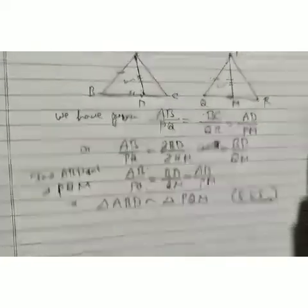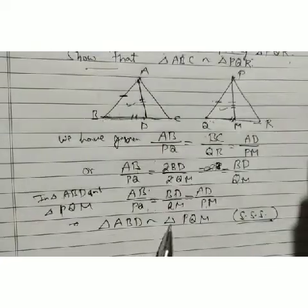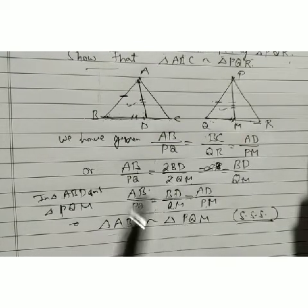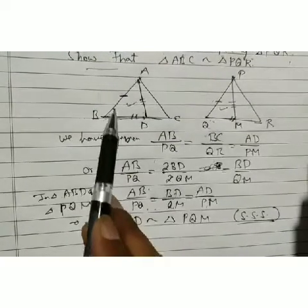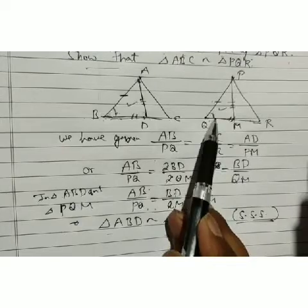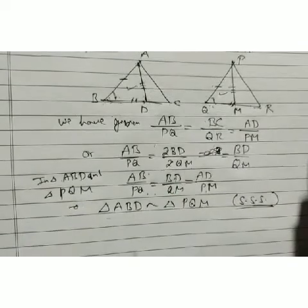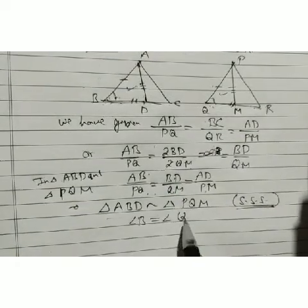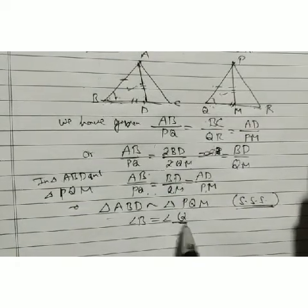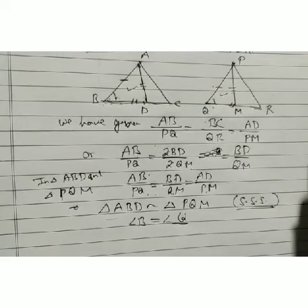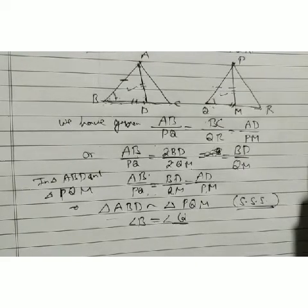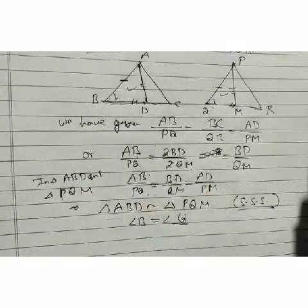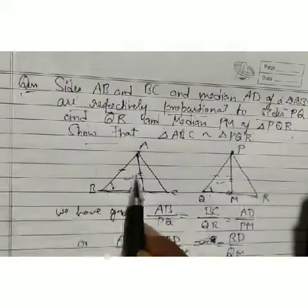Since triangles ABD and PQM are similar, their corresponding angles are equal. Therefore angle B is equal to angle Q.